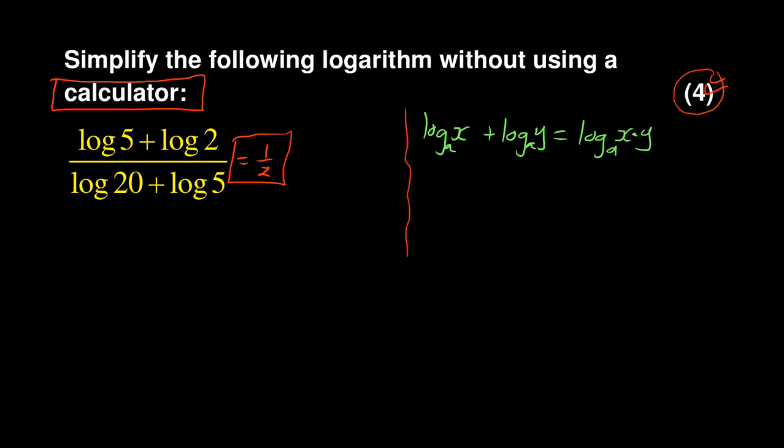So applying this law, we can apply the law on top as you can see. Log 5 plus log 2. Now it is assumed if there is no base, it's always base 10. So you don't have to write the base 10 but that's what it is assumed. So when you have that, this is same as log 5 times 2, or log 5.2. And log 5 times 2 is same as log 10. So you've got that first part.